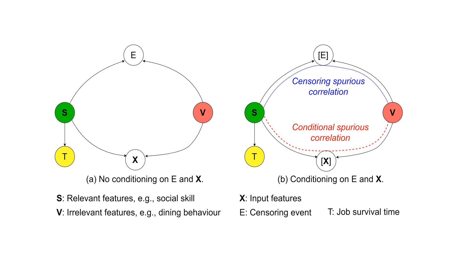This causal graph identifies spurious correlations that create risk prediction instability across environments. Here, we have two types of spurious correlations. The first one is the censoring spurious correlation, which is induced by censored data. And the second one is the conditional spurious correlation, which is induced by conditional prediction.